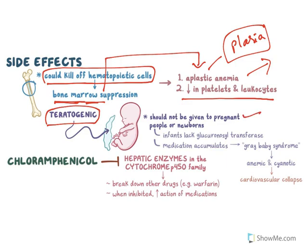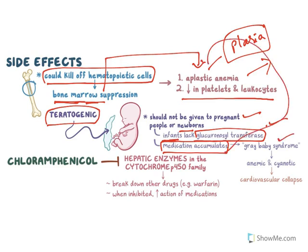Chloramphenicol is also teratogenic, so it should not be given to pregnant women or newborns. In infants especially, lack of glucuronosyltransferase enzyme causes the drug to accumulate, resulting in gray baby syndrome. Accumulation causes aplastic anemia, which decreases red blood cells, making babies appear gray in color. It also results in a cyanotic condition and cardiovascular collapse.